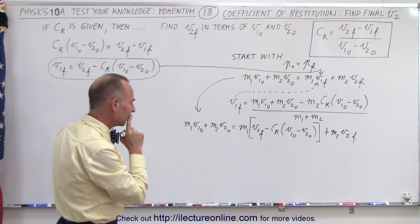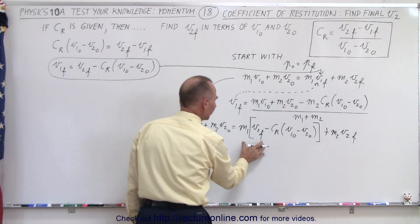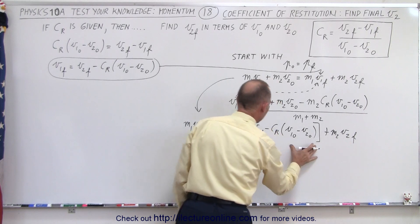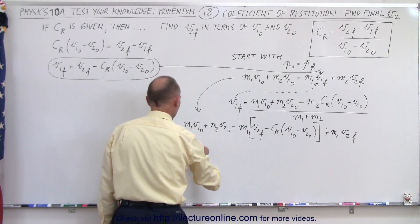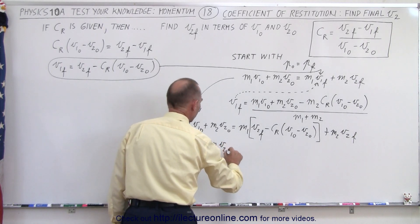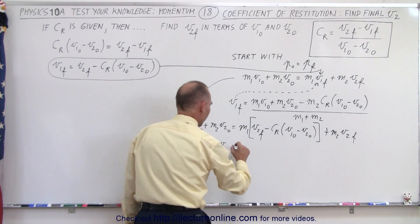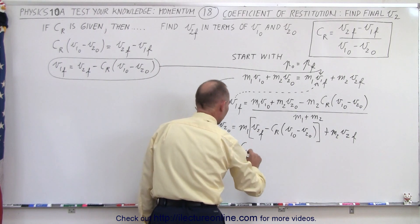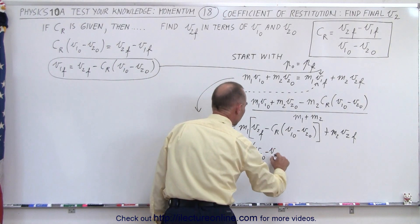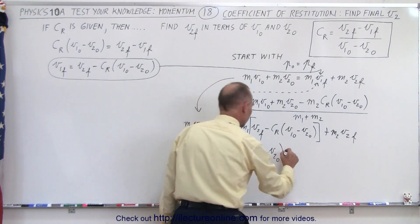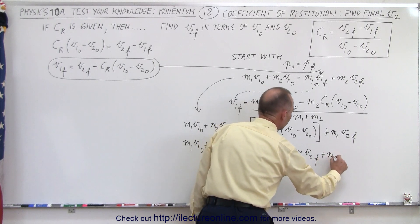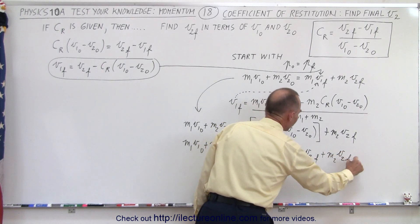So how do we do that? Well, we have an M1 V2 final here. We have an M2 V2 final here. And then let's move this to the left side. So we have M1 V1 initial plus M2 V2 initial plus M2 V2 initial plus M2 V2 final.